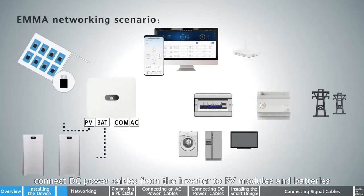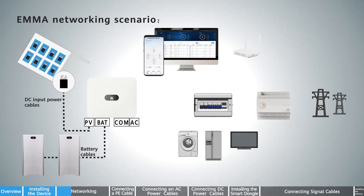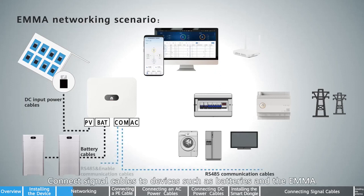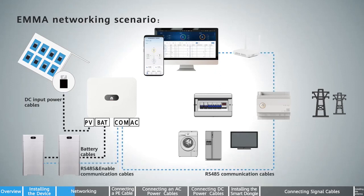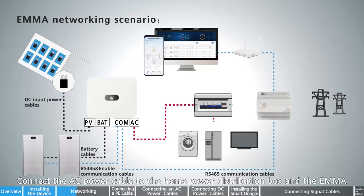In the EMA networking scenario, connect DC power cables from the inverter to PV modules and batteries. Connect the AC power cable to the home power distribution box and the EMA.